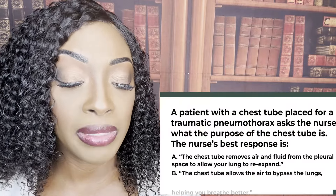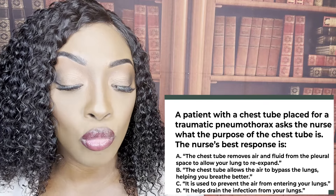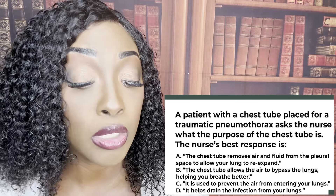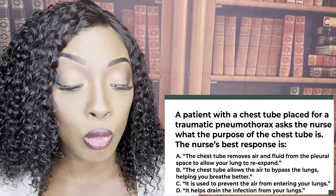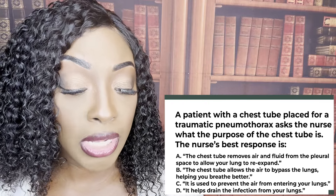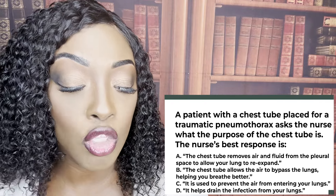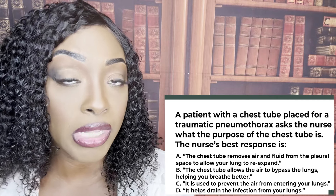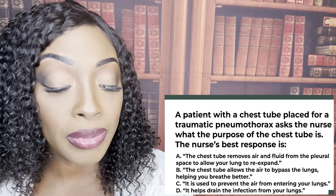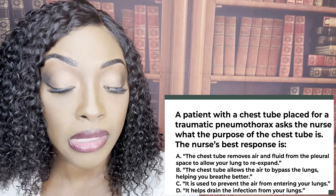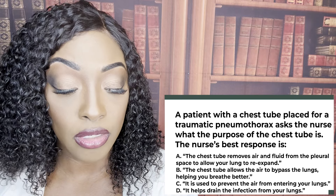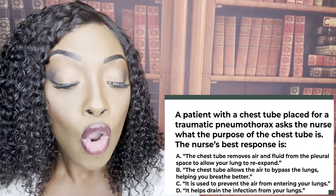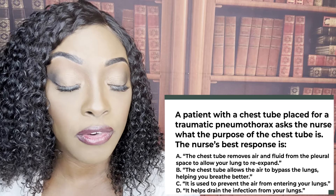A patient with a chest tube placed for a traumatic pneumothorax asks the nurse what the purpose of the chest tube is. The nurse's best response is: A, a chest tube removes air and fluid from the pleural space to allow your lung to re-expand. B, a chest tube allows air to bypass the lungs, helping you breathe better. C, it's used to prevent air from entering your lungs. Or D, it helps drain the infection from your lungs.